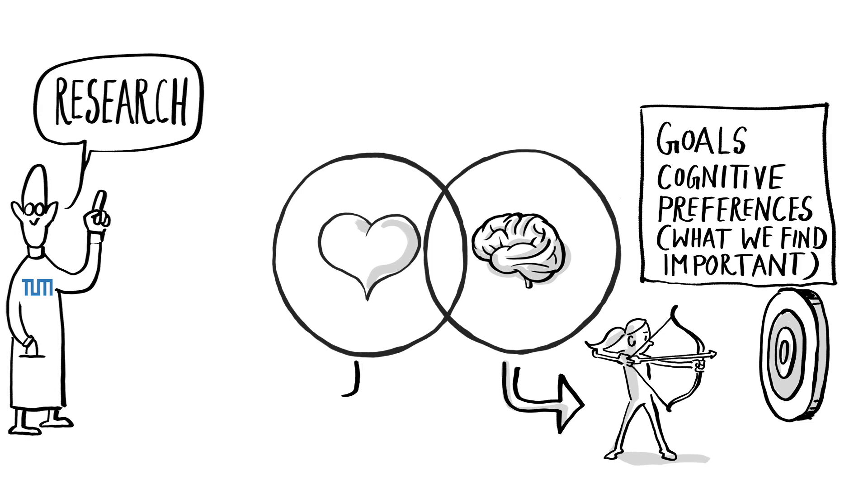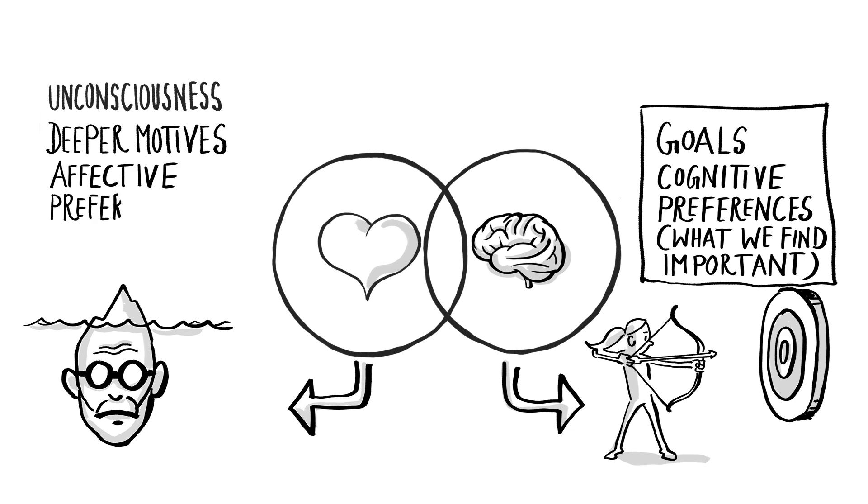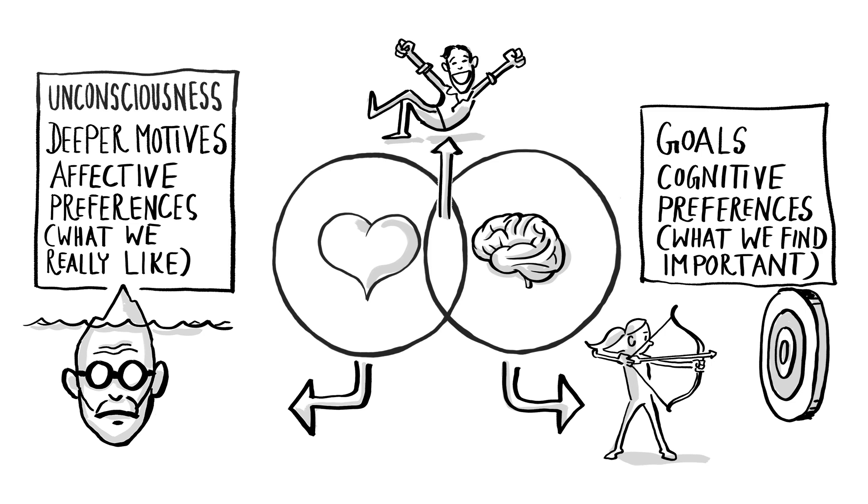Heart is related to the unconscious, to our deeper motives as the source of our so-called affective preferences, what we really like. Scientific studies have shown that the overlap of the two circles is associated with harmony and well-being.